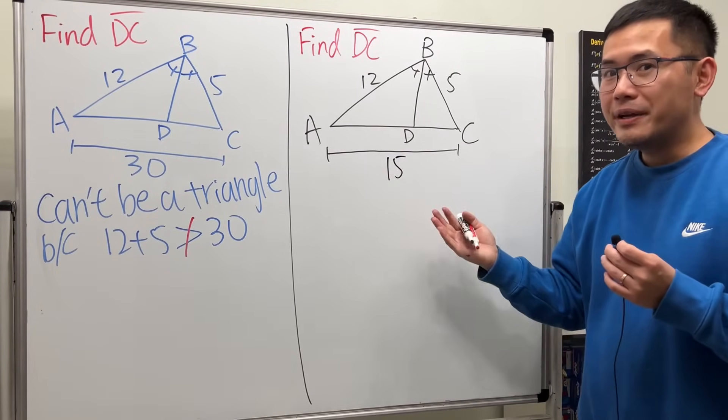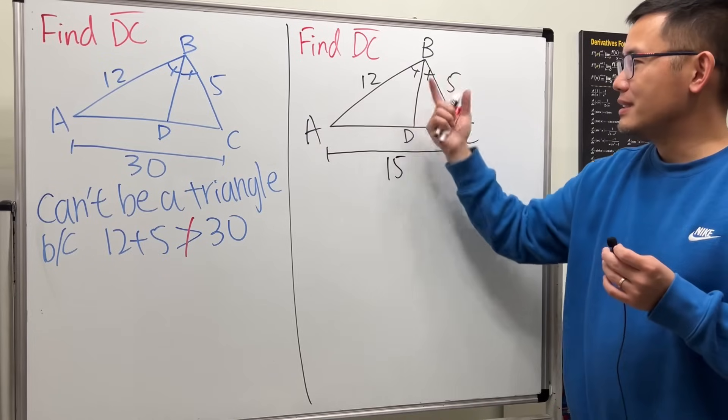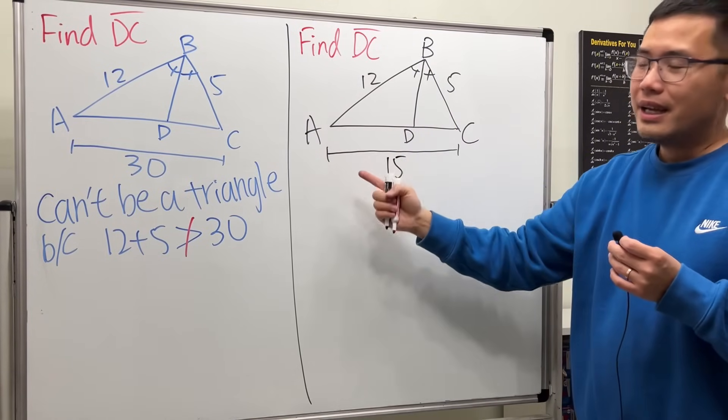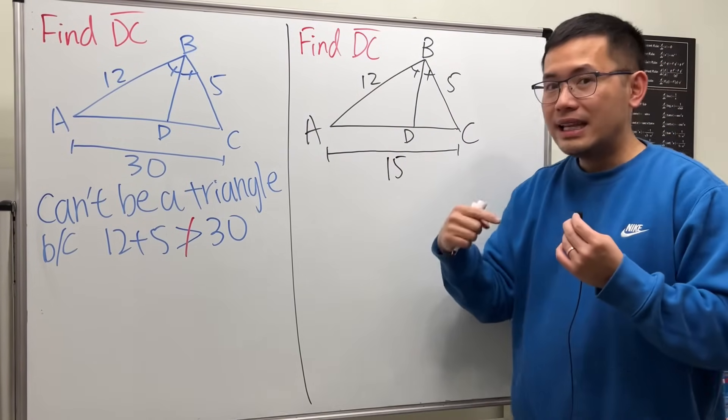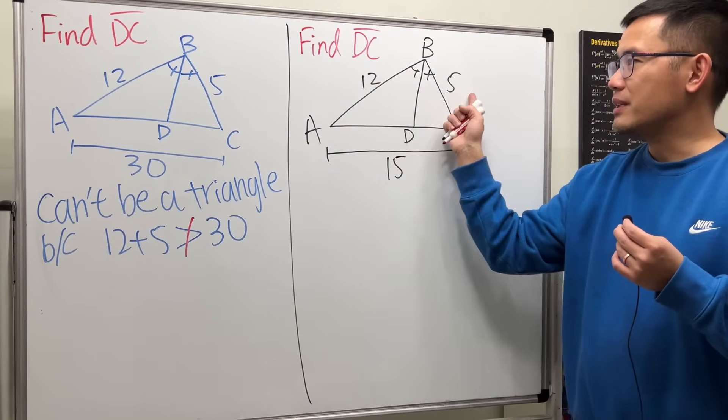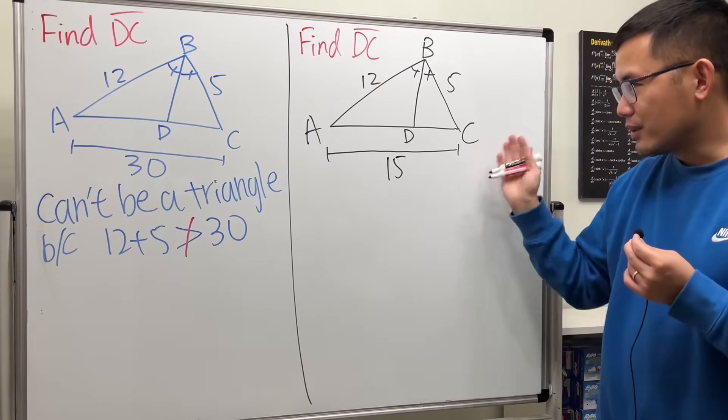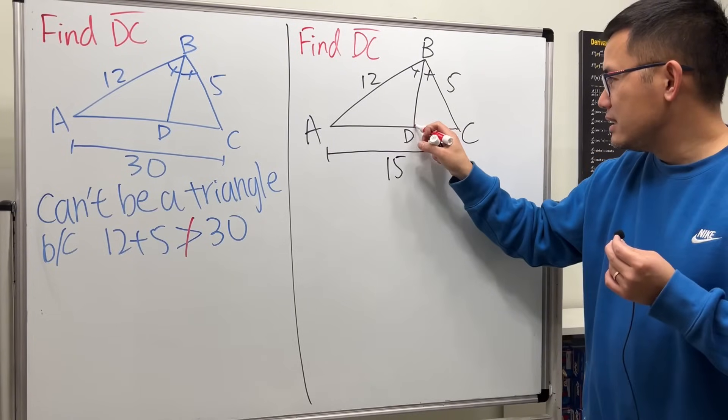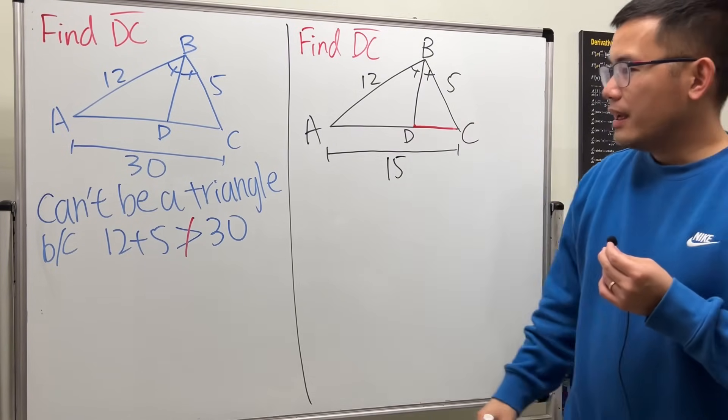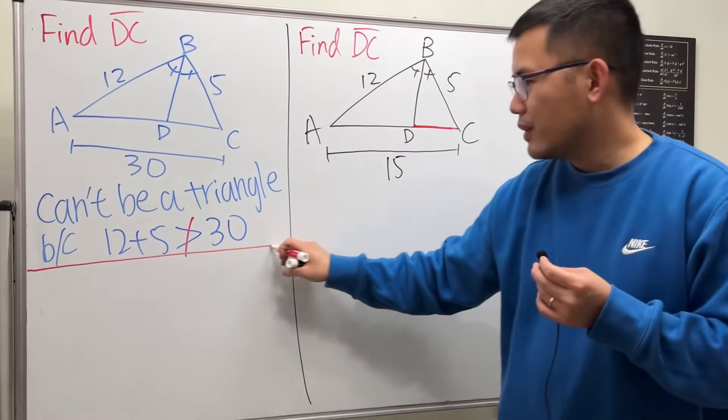Again, this side has to be bigger than 12 because this is apparently longer than that. But this has to be less than the sum of this and that, so 17. Okay, so let's do this one instead. How do we solve it?